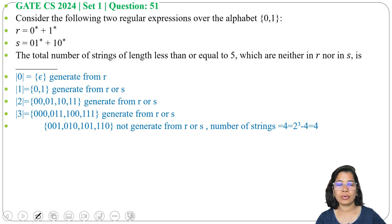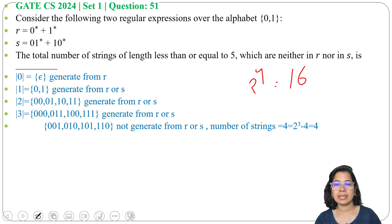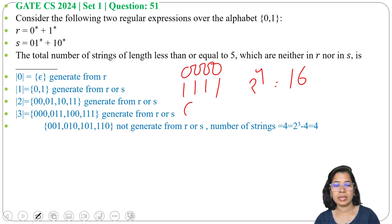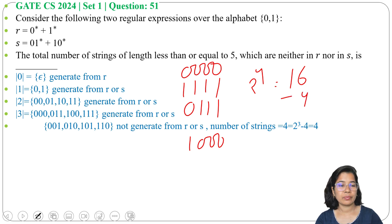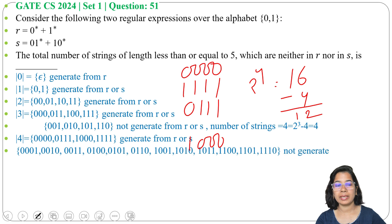Next, length 4. How many strings are there? 2 power 4 — total 16 strings possible. From those 16, only 4 strings can be accepted by R and S: 0000, 1111, 0111, and 1000. So rather than these 4 strings, the other strings cannot be generated from R and S. How many strings cannot be generated? It's 16 minus 4, which is 12. So 12 strings of length 4 cannot be generated from R and S.